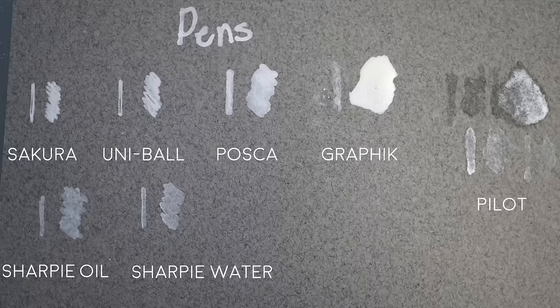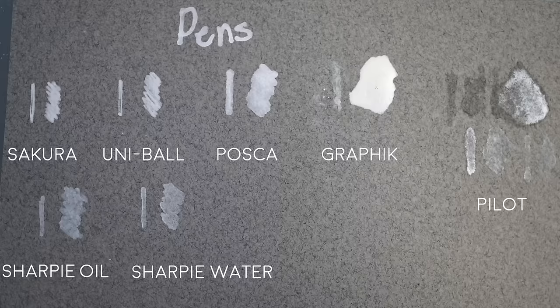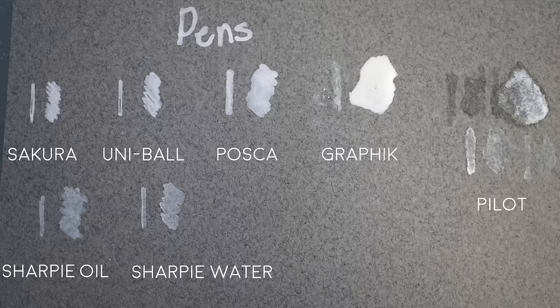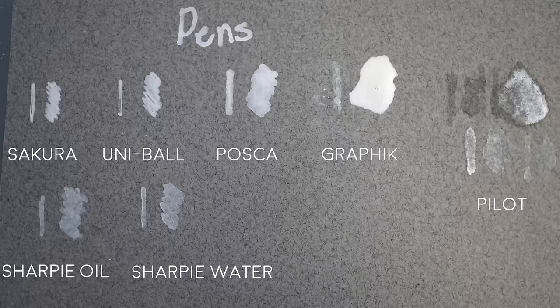And here's the final, completely dried result of the pen swatches on the toned paper. Personally, I prefer the results of the Sakura Gelly Roll, the Uniball Signo gel pen, and the Posca marker. I know the graphic pen looks like it's the most pigmented on this paper, but that little side swatch beside the single stroke is an unreasonable amount of ink that ended up spilling onto the page.